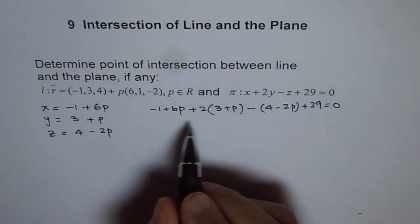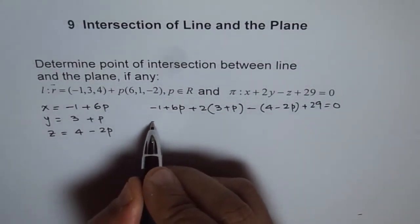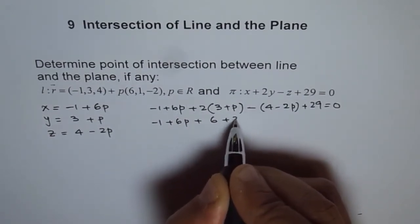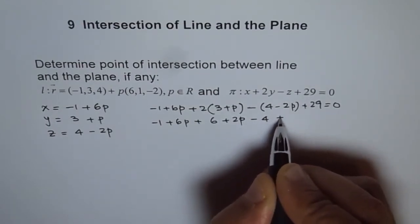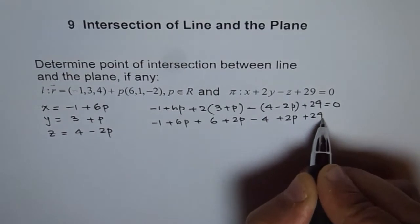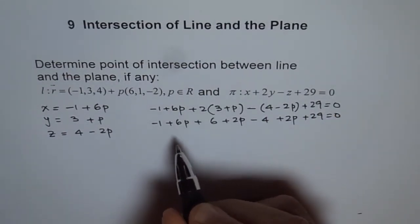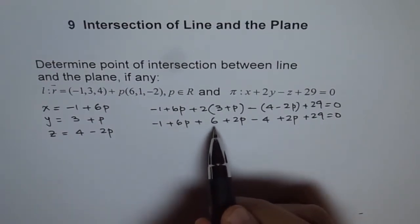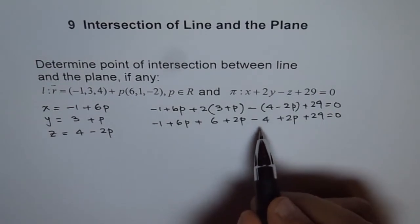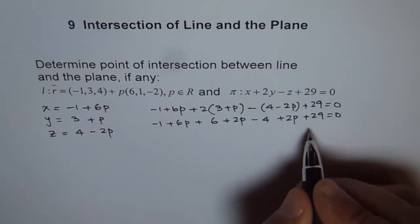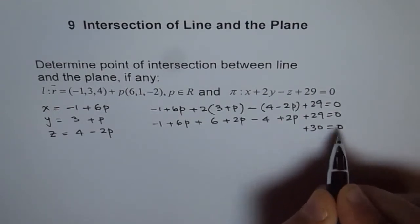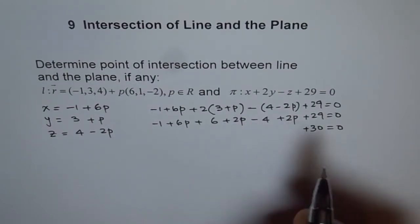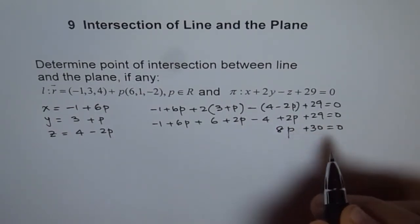Now we can open the bracket and then combine the like terms. So we get -1 + 6p + 2 times 3 is 6 + 2p - 4 + 2p + 29 = 0. And now we can combine the numbers and the variables. So -1 + 6 is 5, minus 1 is plus 1, plus 1 plus 29 is plus 30. And as far as p's are concerned, 6p and 2p, 8p. So 8p + 30.